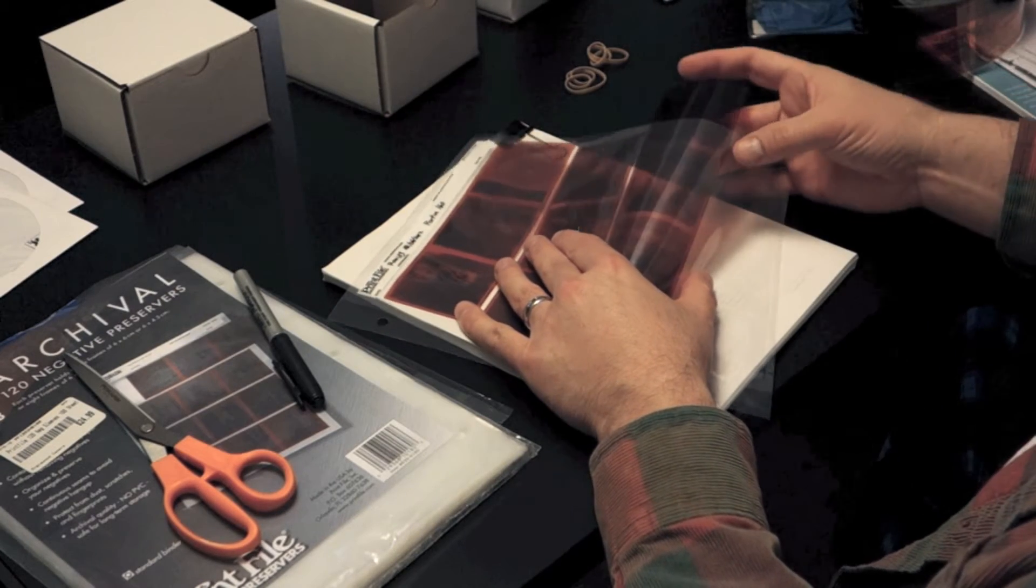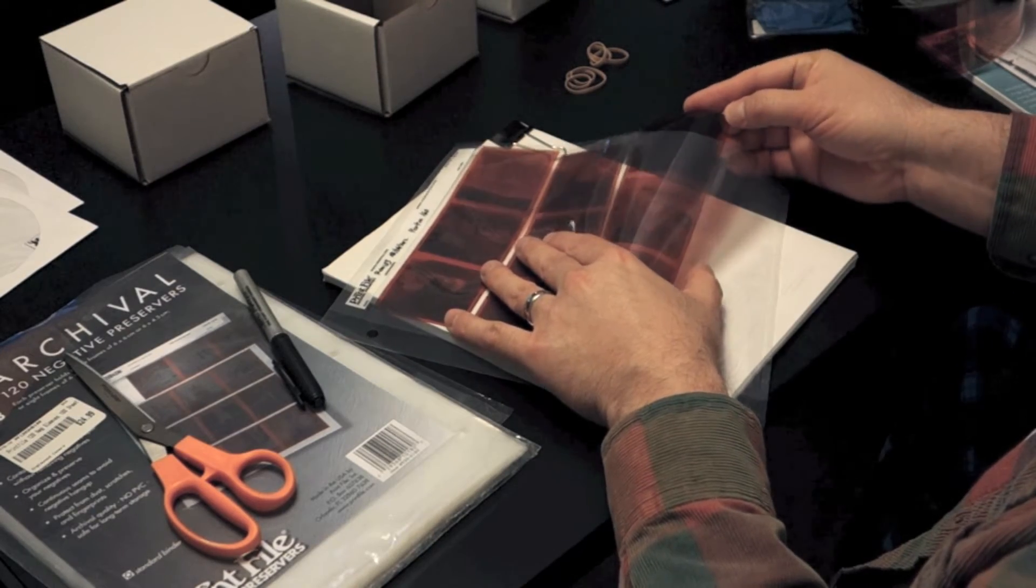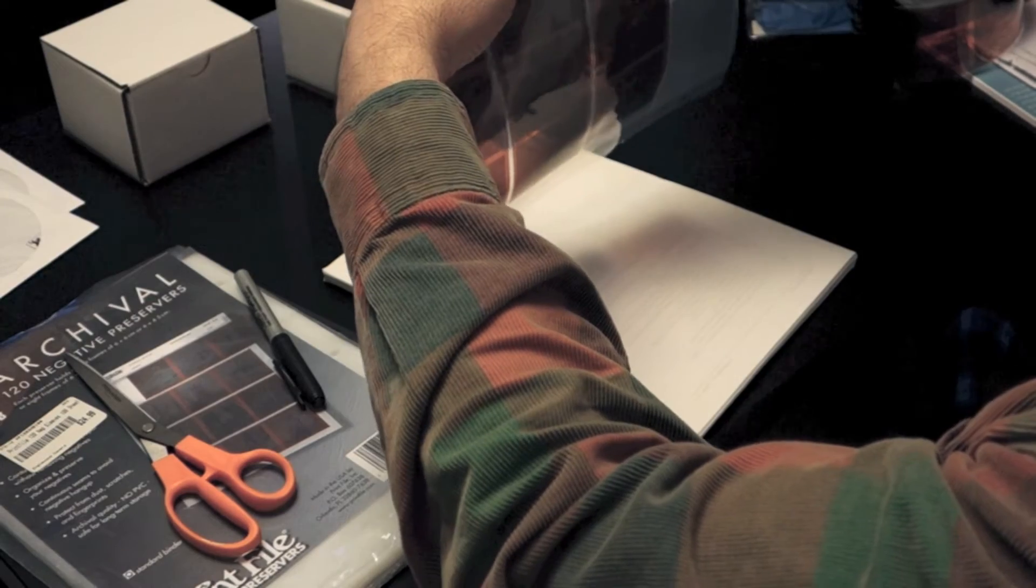So now I'm putting a little bit of a warp on the negative. And that usually helps it get in there a little easier, but not when the corners catch inside the sleeve.